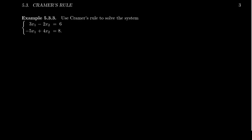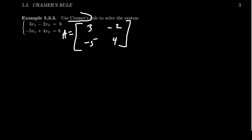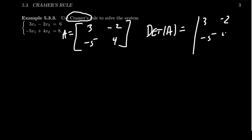Let's see how to use Cramer's Rule to solve a system of equations. Consider the matrix A, a 2×2 matrix: 3, -2, -5, and 4. To solve a system using Cramer's Rule, you first need a square matrix, and it must be non-singular. One way to check is to compute its determinant — if it's non-zero, the matrix is non-singular.